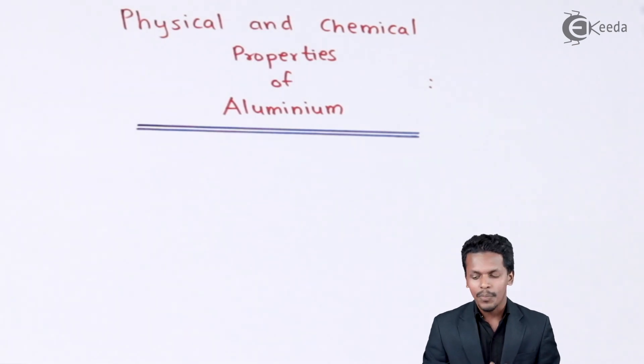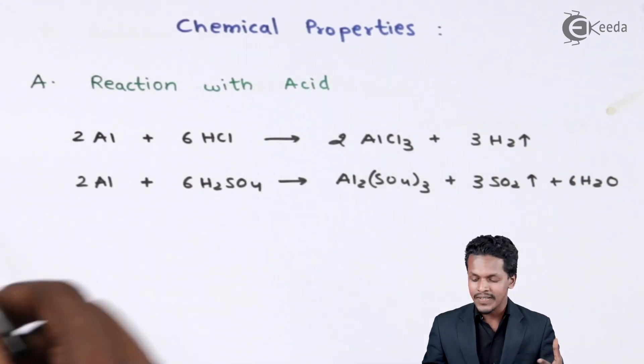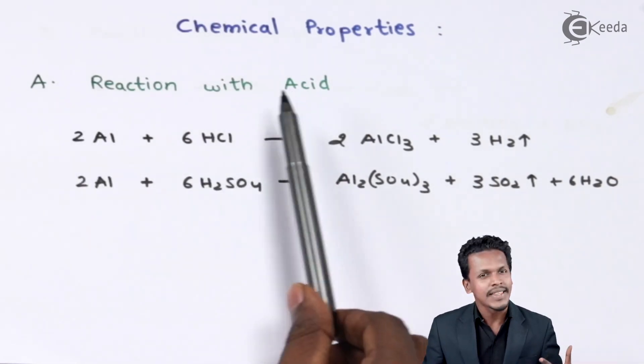Now let us talk about the chemical property. Talking about the chemical properties that could be exhibited by aluminium, starting with the first one: what happens when aluminium is reacted with acid.